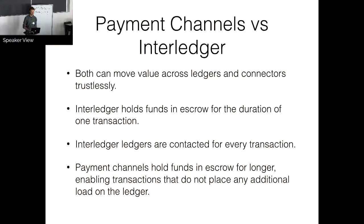So in comparison to Interledger, both can move value trustlessly. Interledger holds the funds in escrow for the duration of one transaction. So the escrow is there to facilitate the transaction and make sure that nobody loses any money. The ledgers are contacted for every single transaction. Payment channels are similar, but they hold the funds in escrow for longer. So instead of one transaction, they're held in escrow for a while. And so then each payment that goes through is using the same escrow amount, but doesn't contact the ledger, doesn't add any load to the ledger.